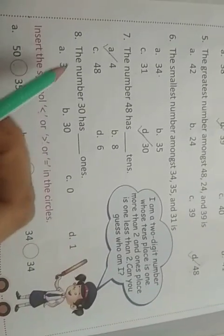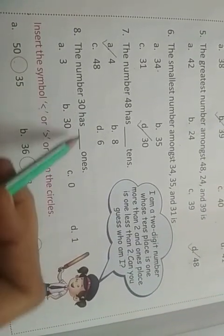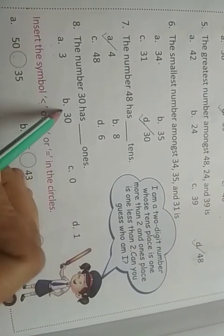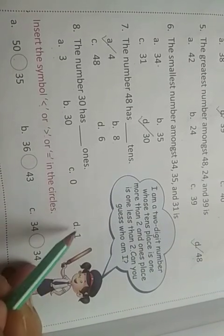Eight, the number 30 has dash ones. 30 में ones कौन सा है? a) 3, b) 30, c) 0, d) 1. So c is the correct option, 0.